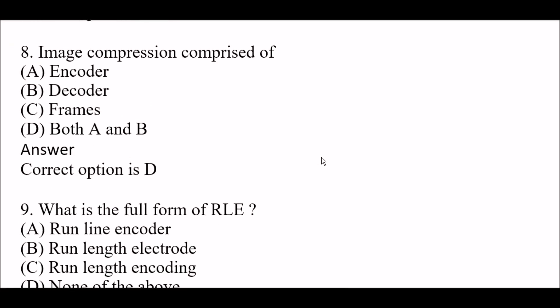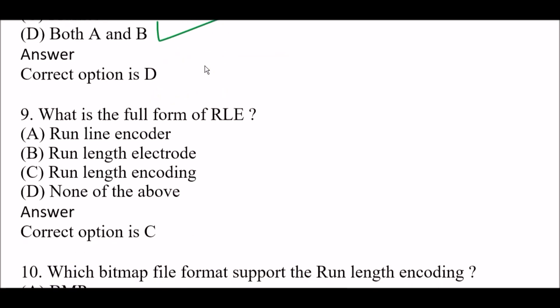Next question: Image compression is comprised of — Option A: encoder, Option B: decoder, Option C: frames, Option D: both A and B. The right answer is Option D, both A and B. Image compression is comprised of both an encoder as well as a decoder.